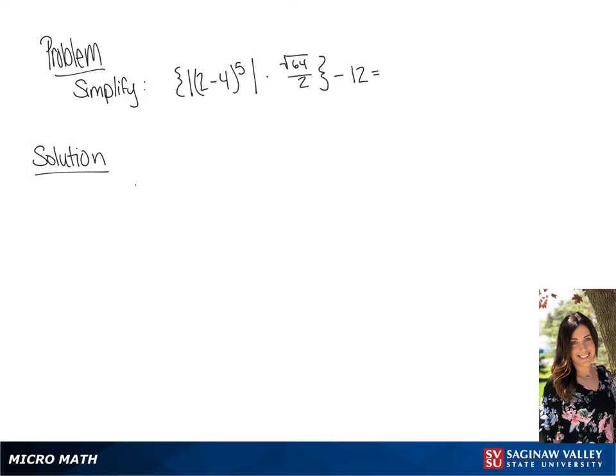We are going to simplify this using order of operations. In our first step, we are going to simplify the terms in the parentheses, and at the same time we're going to simplify the square root of 64.